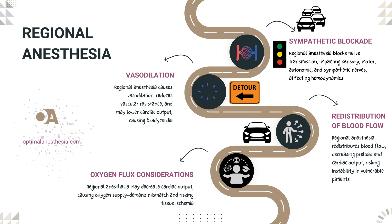But it doesn't stop there. Imagine a situation where the city suddenly experiences a surge in demand, perhaps due to a major event like surgery — what we can think of as surgical stress. During these times, the demand for oxygen skyrockets, but the reduced traffic flow, or cardiac output, can create a mismatch between supply and demand. This mismatch can lead to a lack of oxygen in critical areas, such as the heart muscle — the myocardium — and skeletal muscles, potentially causing ischemia.